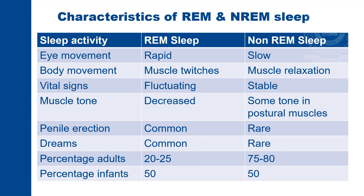Adult sleep comprises 20 to 25 percent REM sleep and 75 to 80 percent non-REM sleep. In infants, REM sleep comprises 50 percent and non-REM sleep 50 percent.